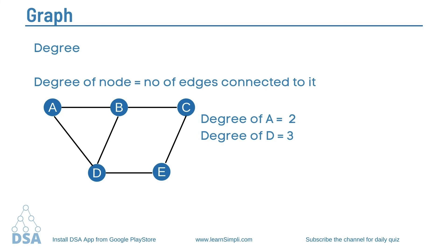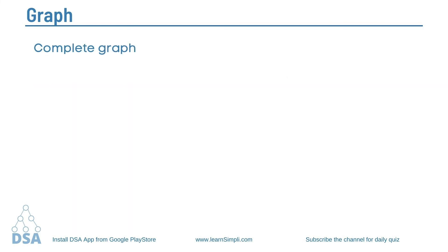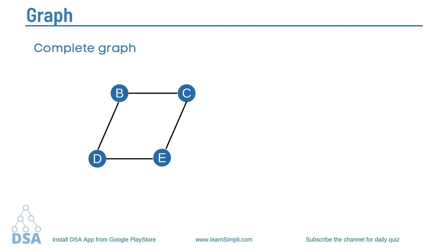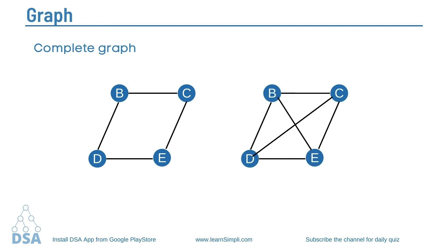Next is the complete graph. A complete graph is one in which every node is connected with all other nodes. Don't get confused between a connected graph and a complete graph. In a complete graph, there must be an edge between every pair of nodes in the graph. That is all about the graph.